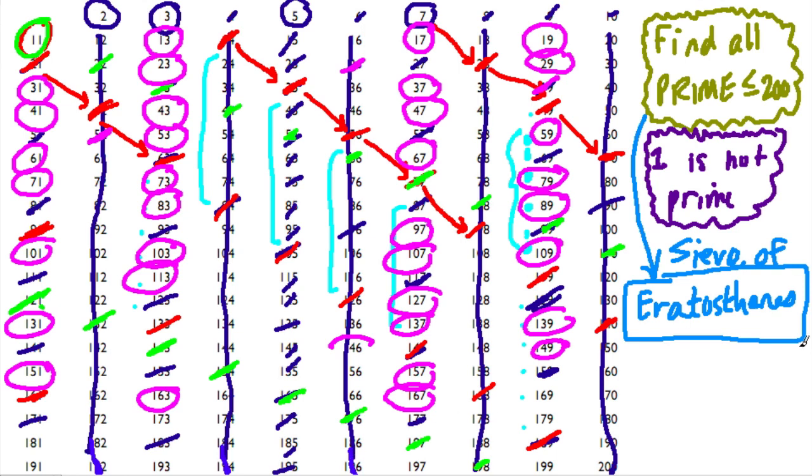And the only number left that's not prime is 169, which is 13 squared. And all of these numbers here, all the ones left, so we're done, are the prime numbers between, up to and equal to 200. And that's our list. All right, thanks for hanging in there.